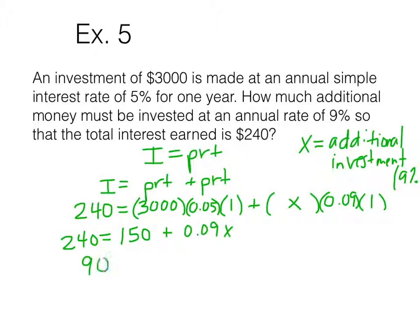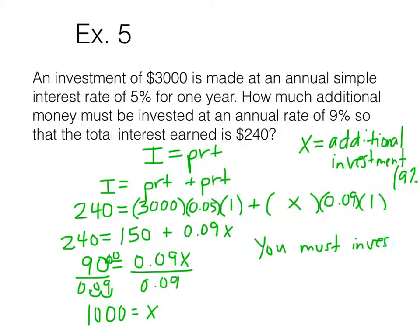So we have 240 equals 3,000 times 0.05 is 150, times 1 is 150, plus x times 0.09 times 1, which is 0.09x. Subtract 150 from each side. We get 90 equals 0.09x. Divide both sides by 0.09. Too lazy to do a calculator. Two spaces, two zeros. 9,000 divided by 9. You must invest $1,000 at 9%.